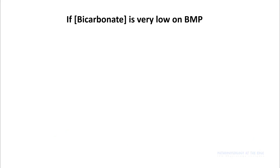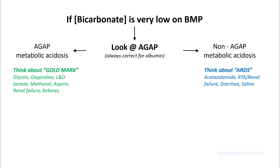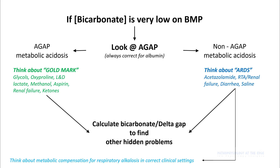To summarize: if your bicarb is low on basic chemistry, look at your anion gap. If you have an anion gap, you have metabolic acidosis — go through GOLD MARK to figure out the cause. If you do not have an anion gap, you are possibly dealing with non-anion gap acidosis — think about the ARDS mnemonic: Acetazolamide, Renal Tubular Acidosis, Renal Failure, Diarrhea, and Saline — then calculate the delta gap to find other hidden problems. Sometimes if you don't see any anion gap, you may be dealing with metabolic compensation for respiratory alkalosis in the correct clinical setting, like chronic hypoxemia.